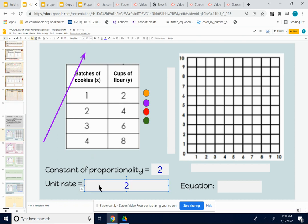So the unit rate is simply two cups. I don't have room to type in flour. So I'm just going to put two cups per batch. So that's the unit rate and the constant of proportionality.